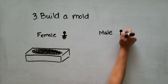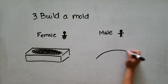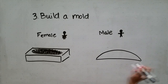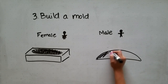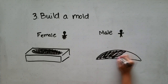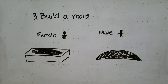With a male mold, you do the opposite. You build what the inner dimensions of the canoe would be, generally upside down on a table, and then the concrete is placed on the outside of that mold. The contact surface between the concrete and the mold then becomes the inside of the canoe.